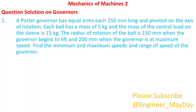A Porter governor has equal arms each 250 millimeters long and pivoted on the axis of rotation. Each ball has a mass of 5 kilograms and the mass of the central load on the sleeve is 15 kilograms. The radius of rotation of the ball is 150 millimeters when the governor begins to lift and 200 millimeters when the governor is at maximum speed. Find the minimum and maximum speeds and range of speed of the governor.